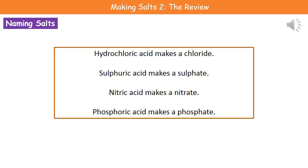We do need to know how to work out the names of the salts we're making. There are four important rules to remember: if it's hydrochloric acid, the name of our salt will always end in a chloride; sulfuric acid always makes a sulfate; nitric acid always makes a nitrate; and phosphoric acid always makes a phosphate. Make sure you learn those four acids and the names of the salts they make.